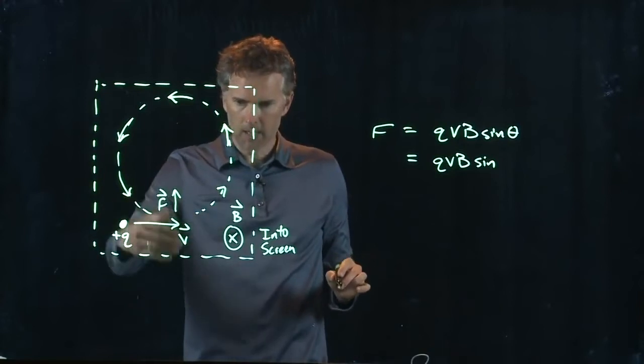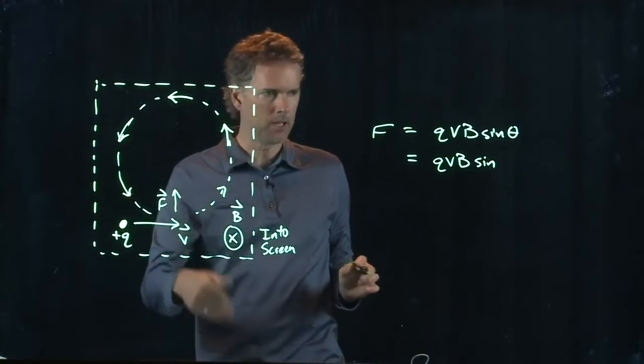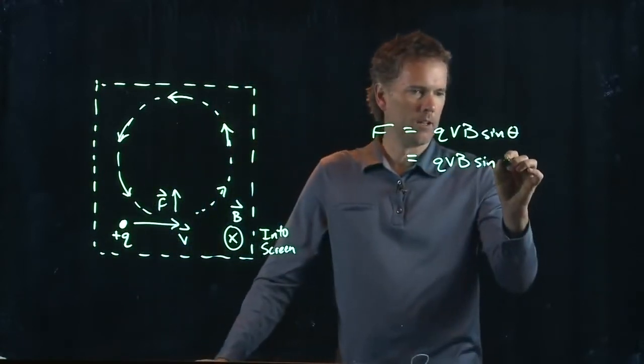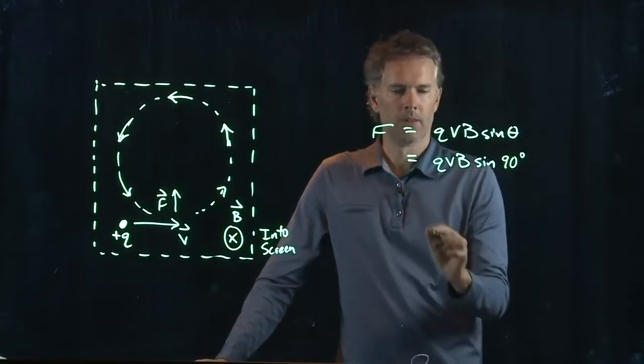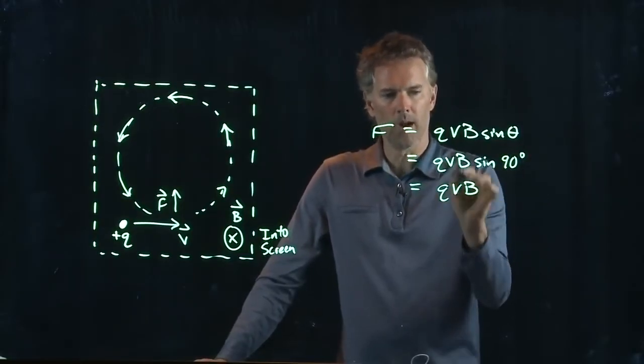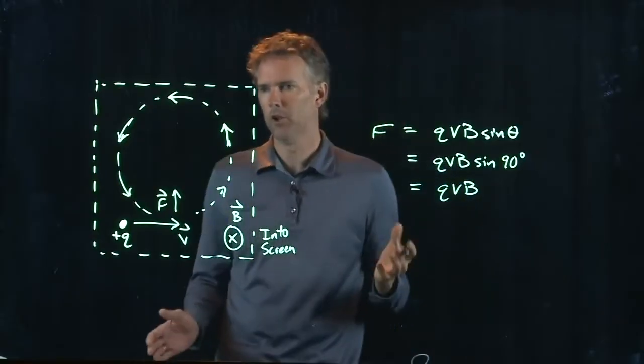Well, V was to the right. B was into the screen. And so, we get 90 degrees. But sine of 90 degrees is just one. So, what's the force? QVB.